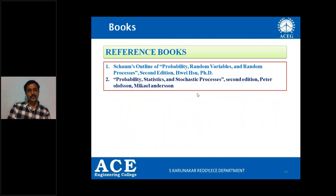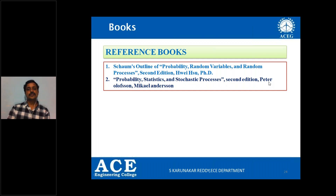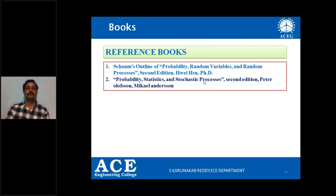Two more recommended books are: Schaum's Outlines Probability, Random Variables and Random Process, which has a large number of solved numerical problems — excellent and interesting to learn. And Probability, Statistics and Stochastic Process by Peter Olofsson, which is also interesting concept-wise and covers a lot of concepts, though it is not prescribed in the JNTU syllabus. You can still refer to it.